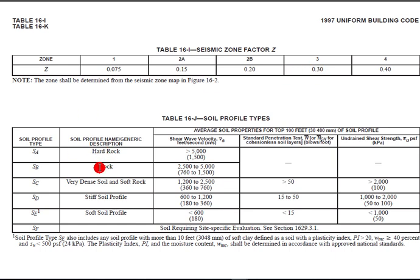And we have soil type: hard rock is SA, rock is SB, very dense soil is SC, stiff soil - we have stiff soil in the given statement, so you can take soil profile type SD. Now for soft soil you can take SE.